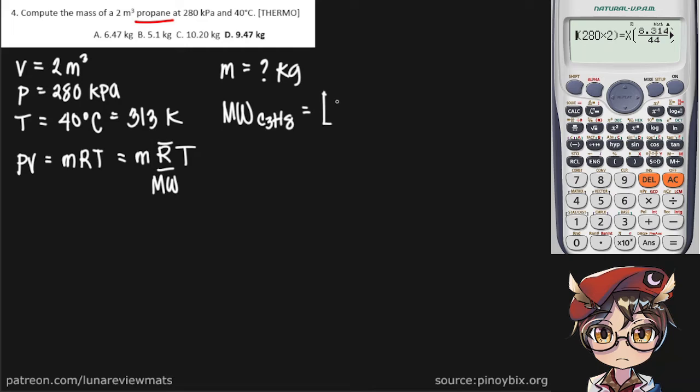Now the molecular weight of carbon is 12 and it has 3 of them. In addition, the molecular weight of hydrogen is 1 and it has 8 of them. Solving for that we're going to get a molecular weight of 44.